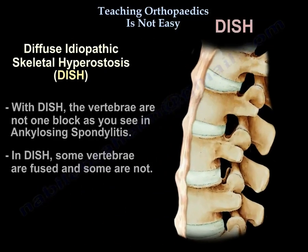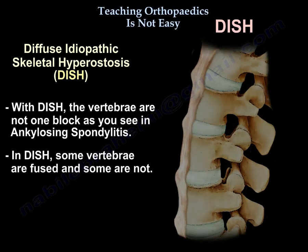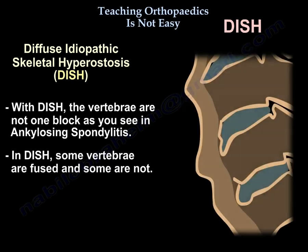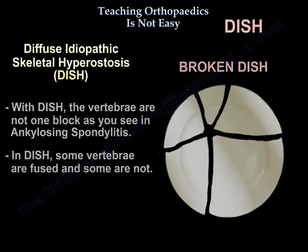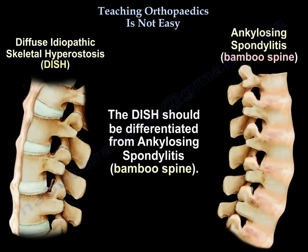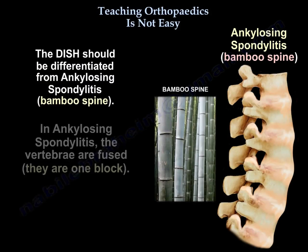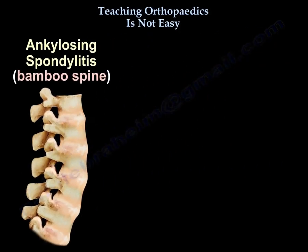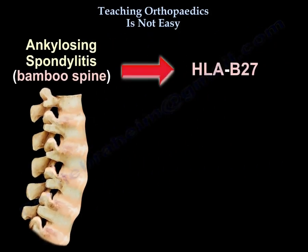With DISH, the vertebrae are not one block as you see in ankylosing spondylitis. In DISH, some vertebrae are fused and some are not. DISH should be differentiated from ankylosing spondylitis, which will have a bamboo spine — the vertebrae are all fused. In ankylosing spondylitis, you will get the HLA-B27.